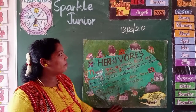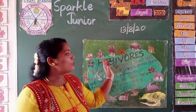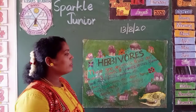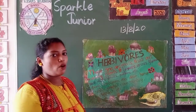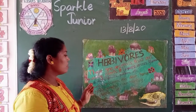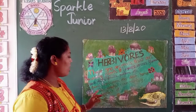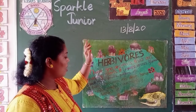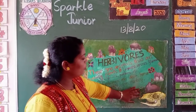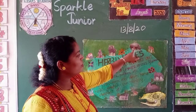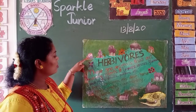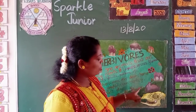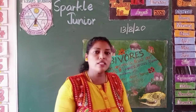Can you see the picture behind me? This is a herbivores chart. Herbivores are animals that eat mainly plants — leaves, grass, flowers, seeds, roots, fruits, pollens, etc. Some herbivores animals are: deer, horse, rabbit, giraffe, cow, monkey, elephant, kangaroo, rhinoceros, buffalo, camel, goat, and zebra. All these are herbivores animals.